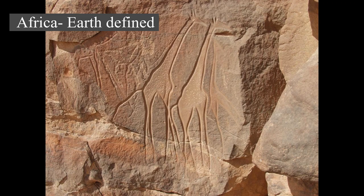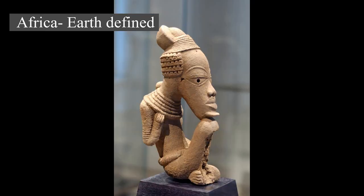Starting in the 16th century, this was driven by trade, including the trans-Atlantic slave trade, which created large African diaspora populations in the Americas. From the late 19th century to the early 20th century, European nations colonized almost all of Africa, reaching a point when only Ethiopia and Liberia were independent polities. Most present states in Africa emerged from a process of decolonization following World War II.